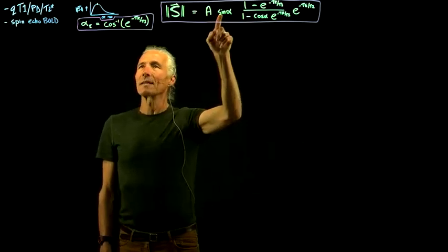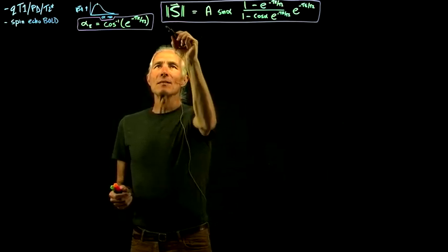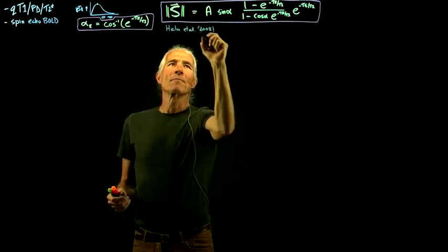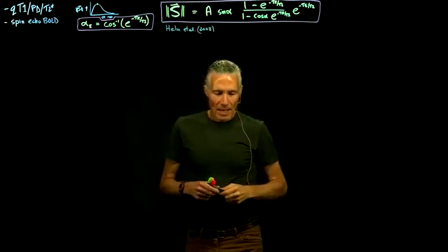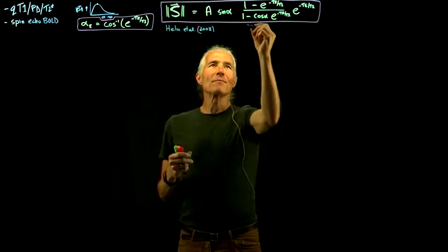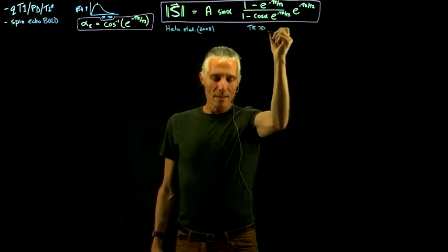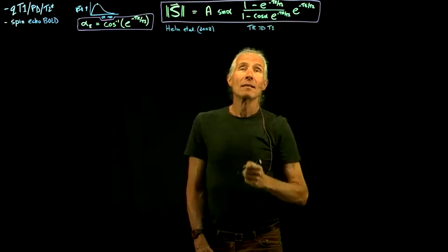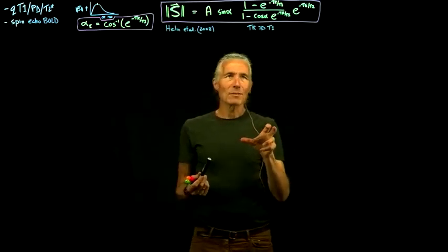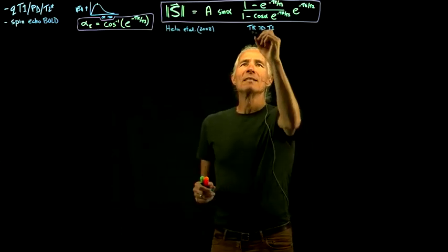Now that equation is a mess, but the original derivation came from Helms et al. 2008, which is in the readings. What you can do is simplify it. If we assume TR is much less than T1 — for a fast gradient echo in the steady-state spoiled, TR might be ~7 ms while T1 is ~2–3 seconds — that assumption is certainly true.